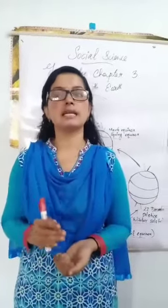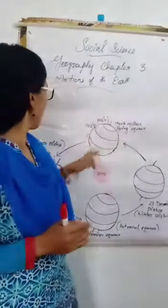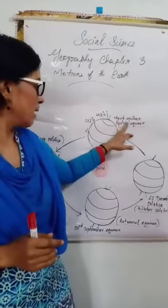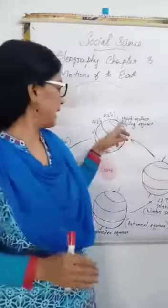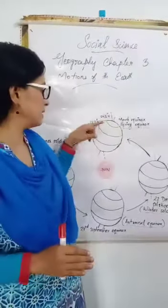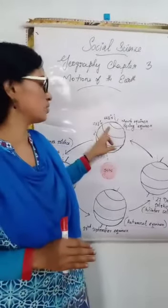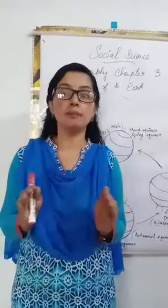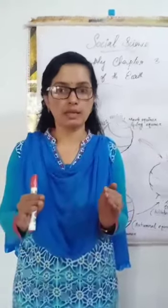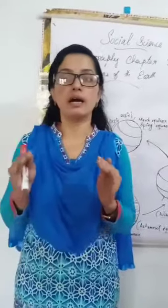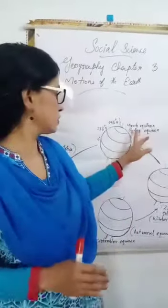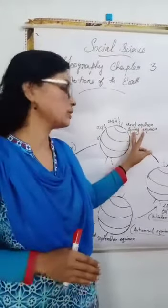On 21st March, the Sun is directly overhead on the equator. This is the March Equinox. Every place on Earth has 12 hours of day and 12 hours of night on this date. This is called the Spring or Vernal Equinox — 21st March.